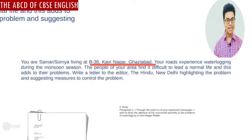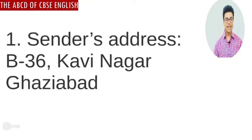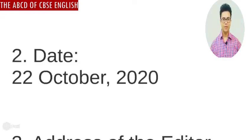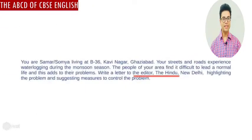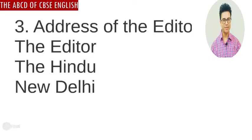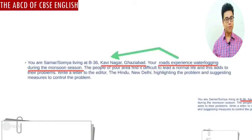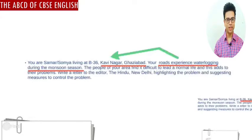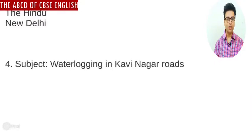The first thing we need to fill out is the sender's address, which is B36, Kavinagar, Ghaziabad. Next we put in the date — remember to use the name of the month in full, since letters to the editor use formal language and we do not use abbreviations like JAN, FEB, etc. Then we go back to the question for the editor's address: The Editor, The Hindu, New Delhi. For the subject, we can simplify it as: Waterlogging in Kavinagar roads.